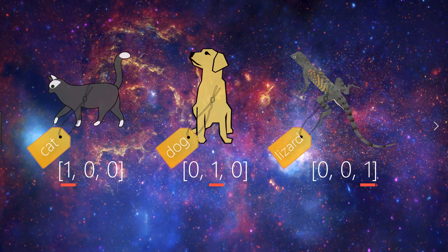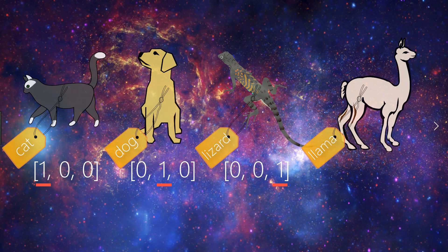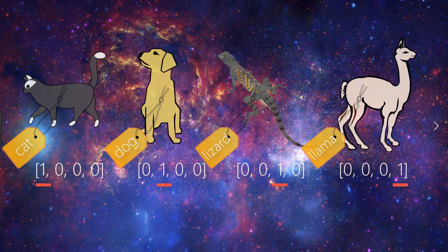Now just for clarity purposes, say we add another category, llama, to the mix. So now we have 4 categories total, and so this will cause each one hot encoded vector corresponding to each of these categories to be of length 4 now. And the vectors will look like this.